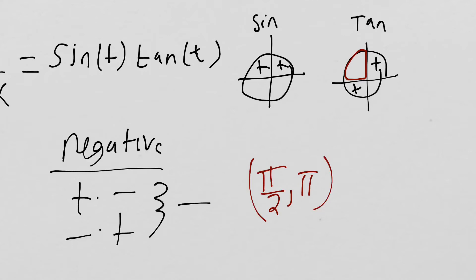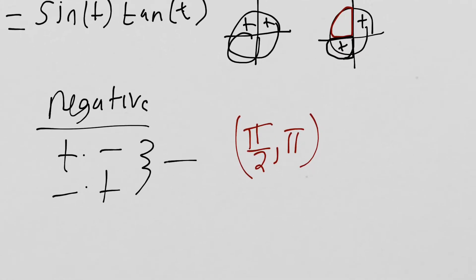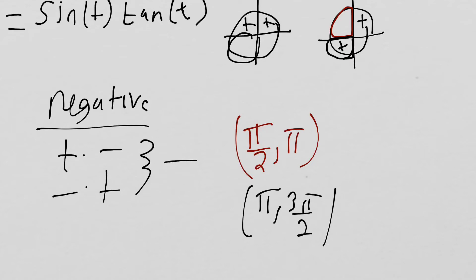So that's going to be a positive times a negative, and the second quadrant is π/2 until π — that's one interval where this is going to have a negative slope. We can also see that in the third quadrant, tangent is positive but sine is negative, so the third quadrant also works. We can say this slope is going to be negative from π until 3π/2.